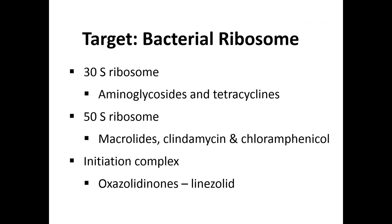Switching from the outer coating of the bacteria towards the ribosomes, there are a number of antibiotic groupings that target protein synthesis. Bacteria generally have two subunits of their ribosomes: the 30S ribosome and the 50S ribosome. Agents active against the 30S ribosome include aminoglycosides such as gentamicin and tobramycin, as well as the entire tetracycline family — minocycline and doxycycline.